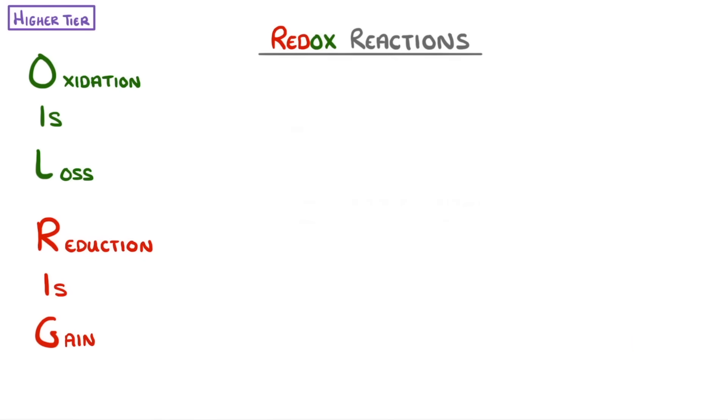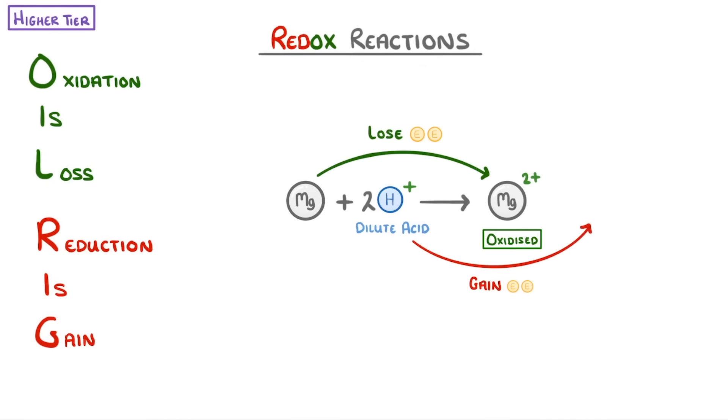For example, if we react some magnesium with a dilute acid, which we can represent as H+, because that's the important part of an acid, then the magnesium atoms will lose two electrons and be oxidized, forming magnesium 2+ ions. Meanwhile, the hydrogen ions will gain those electrons and so be reduced to neutral hydrogen atoms in the form of hydrogen gas.